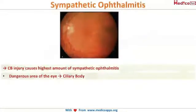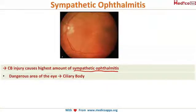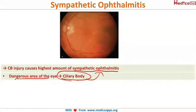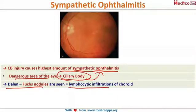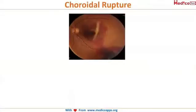When the ciliary body is injured posterior to the iris, it results in the dangerous condition called sympathetic ophthalmitis. Just as there is a dangerous area on the face, the dangerous area of the eye is the ciliary body because injury there leads to sympathetic ophthalmitis. Dalen-Fuchs nodules are the pathognomonic nodules of sympathetic ophthalmitis — they are lymphocytic infiltrations of the choroid.